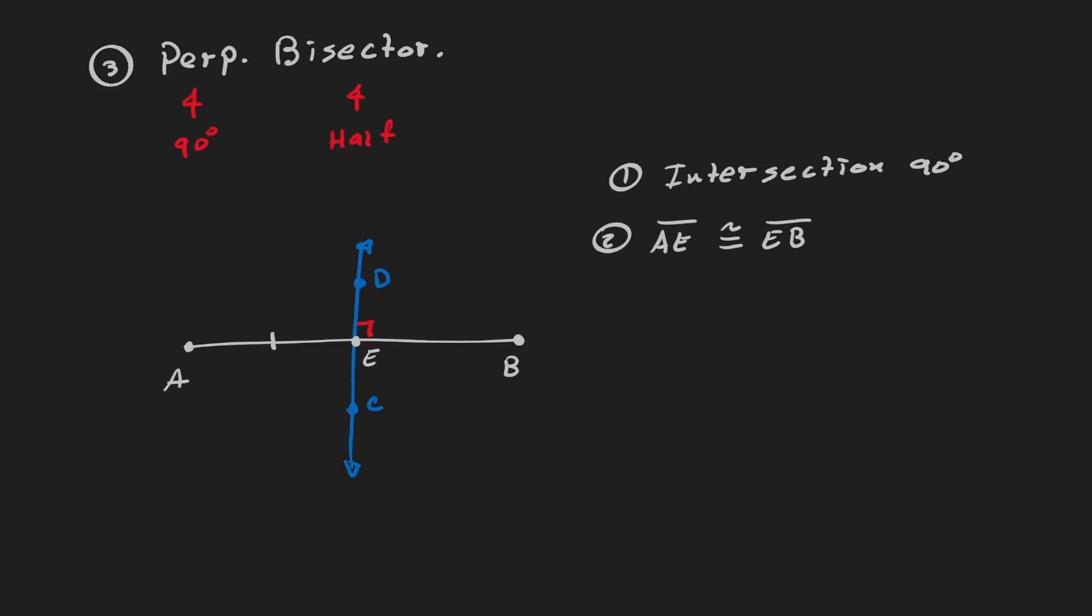If AE is equivalent or congruent to EB, a.k.a. the length of this segment is equivalent to the length of this segment. If those two properties are true, then my conclusion is that the line DC is a perpendicular bisector to AB.